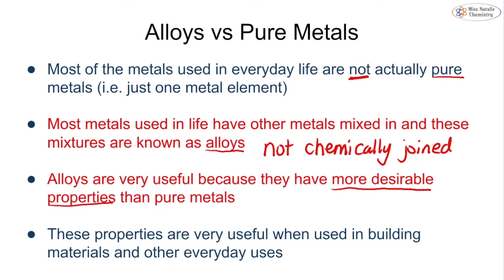Alloys are very useful because they have more desirable properties than pure metals. We take a property of a metal, form an alloy from it to enhance that property — for example, to make it stronger, to have a higher melting or boiling point, or a lower melting point. These enhanced properties make alloys very useful for building materials, everyday objects, and many other applications.